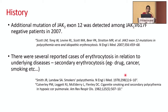This is the history of how polycythemia vera came up in the literature. There were also several reported cases of erythrocytosis in relation to underlying diseases, which we call secondary erythrocytosis. Compared to polycythemia vera — the primary bone marrow disorder — secondary erythrocytosis is very much more common and something we see day to day in clinical life.